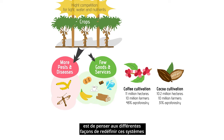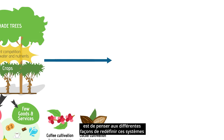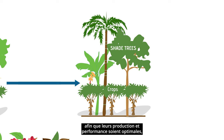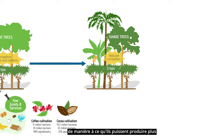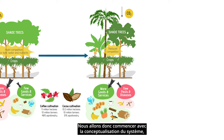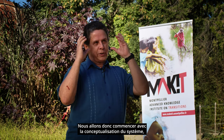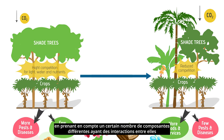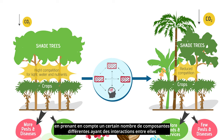So my program here is to think about the different ways that we can redesign this system so that the production and the performance of the system is optimal — in the sense that you can produce more with less resources and maybe have more benefits from the environment. We will start with a conceptualization of the system, which is like having a number of different components that have interactions between them.